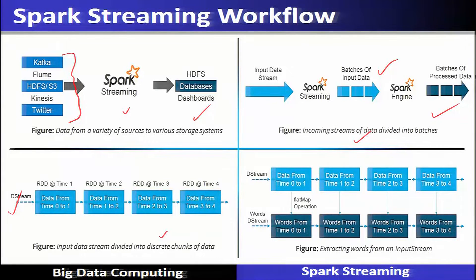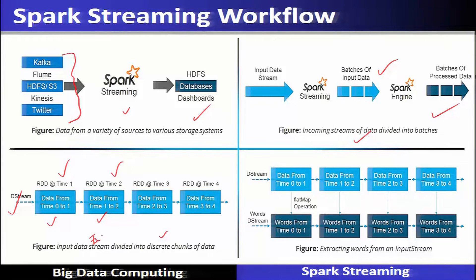A DStream is batches of data of x seconds. For example, with a batch size of 1 second, the data from 0 to 1 second is called RDD at time 1, and the batch from time 1 to time 2 is RDD at time 2, and so on. The batches are divided into discrete chunks — in this example, 1-second batches.